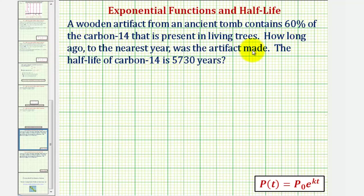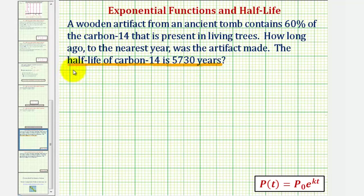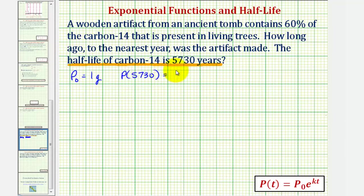To determine how long ago this artifact was made, we have to first find k, the exponential decay rate, and we can find k since we're given that the half-life of carbon-14 is 5,730 years. For example, if we start with one gram of carbon-14, p sub zero equals one gram, then after 5,730 years, half of this would remain, meaning p of 5,730 would equal one-half of a gram. We can use this information to find k and then answer the question.